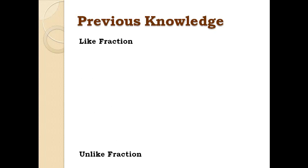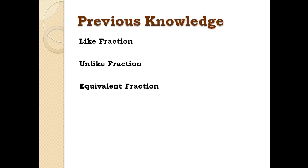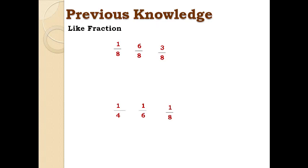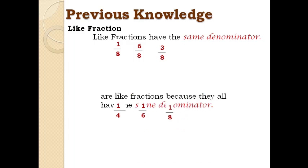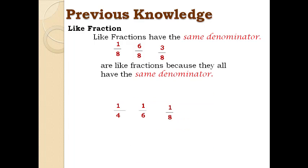Like fractions have the same denominator. For example, 1 over 6, 6 over 8, and 3 over 8 are like fractions because they all have the same denominator.